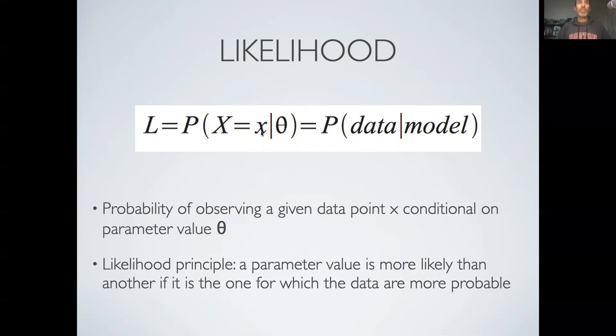So as a reminder, our likelihood is the probability of observing a given data point conditional on a parameter value theta. So we are always thinking about a likelihood as the probability of generating a data point given a model. And from that idea of what a likelihood is, we derived estimators using what was called the likelihood principle. A parameter value is more likely than another if it is one for which the data are more probable.